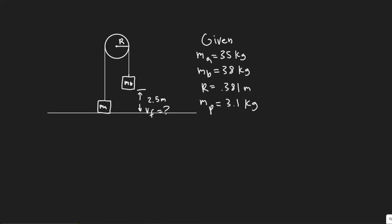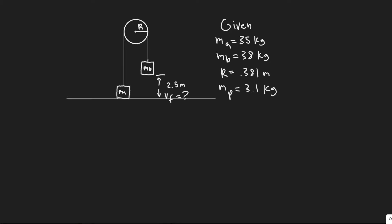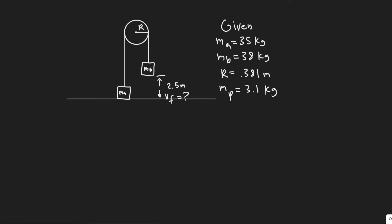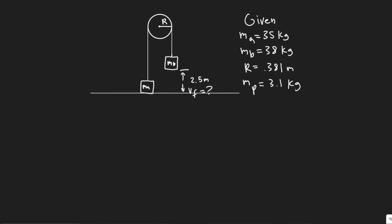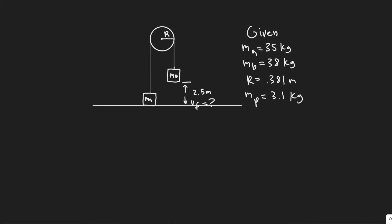In this problem, two masses MA equals 35 kg and MB equals 38 kg are connected by a rope that hangs over a pulley as shown in the figure. The pulley is a uniform cylinder of radius 0.381 meters and mass 3.1 kg. Initially MA is on the ground and MB rests 2.5 meters above the ground. If the system is released, use conservation of energy to determine the speed of MB just before it strikes the ground. Assume the pulley bearing is frictionless.